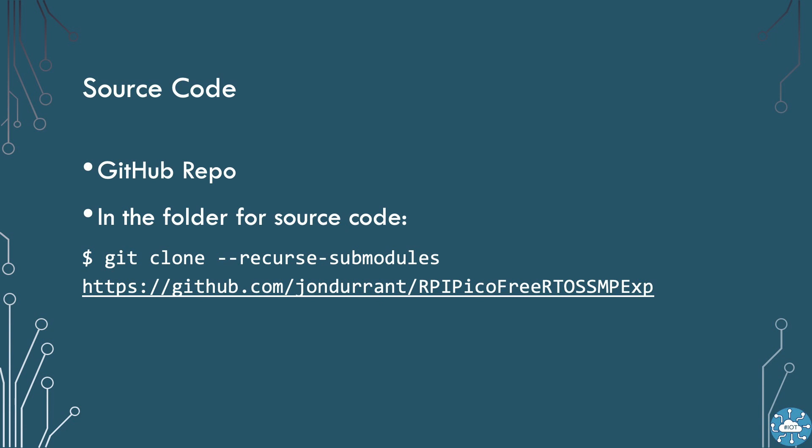The code is all housed on GitHub and you will need to use the git utility to download or clone it. The repository makes reference to the FreeRTOS kernel library, so we use the recursive submodule switch to bring this down too. I tend to keep all of my source projects in a folder called source within my home directory. Wherever you are comfortable hosting your project files is a place to execute this command. I will put a link to the repository in the comments.